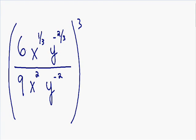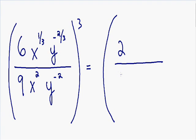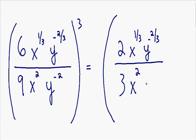The first thing I want to do is simplify the constants in the front. Notice how we have a 6 over 9 in the front of the expression inside the parentheses. So 6 over 9 can be reduced to 2 thirds. So the 6 over 9 becomes 2 over 3 and everything else stays the same. We have an x with a 1 third exponent, a y with a negative 2 thirds exponent. In the denominator we have x squared and y with a negative 2 exponent.